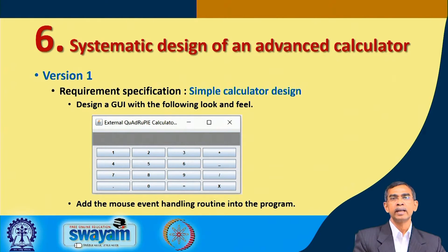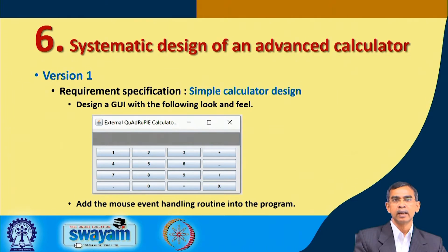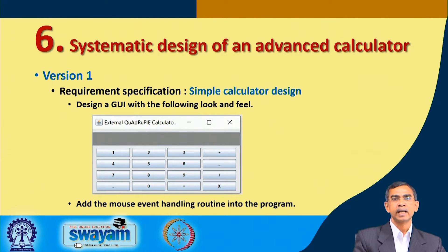This is very simple. We already have an idea — a few buttons are to be there, one text field area will be there, and then the user performs operations. Those operations are basically binary operations; unary operations like square root, cube, and log are not involved here.